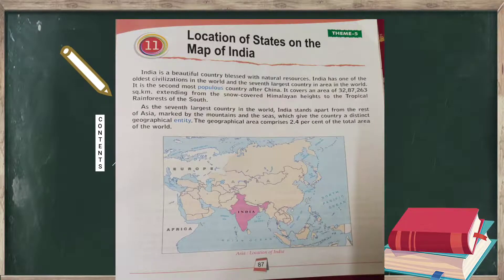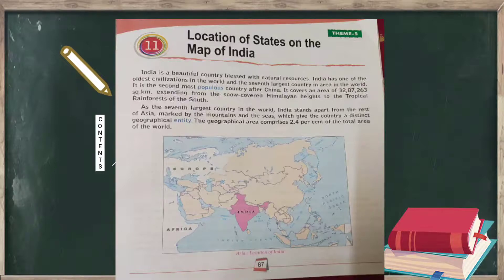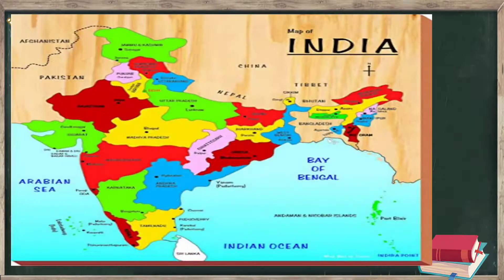The geographical area of India comprises 2.4 percent of the total area of the world. On the second page, a map is given showing different states — this is our Indian map containing all the different states.